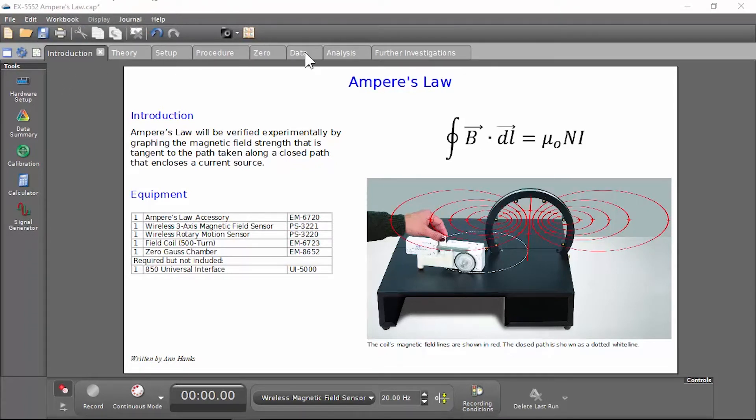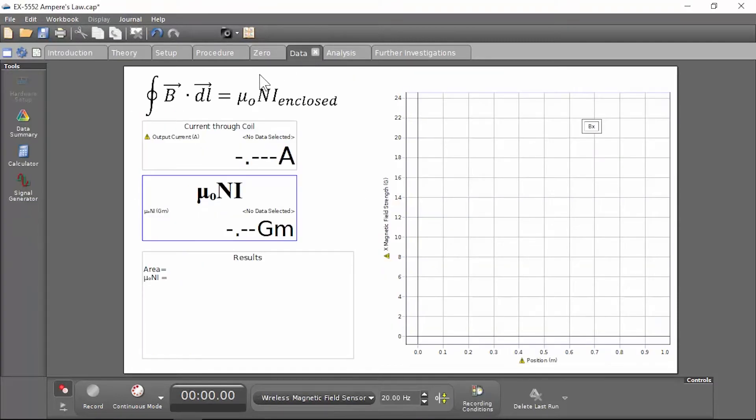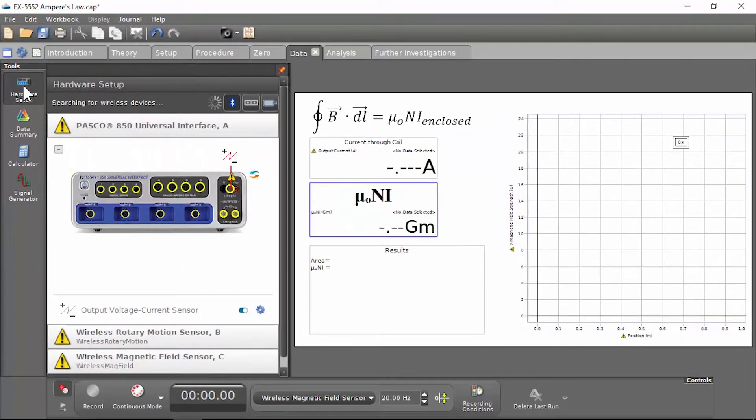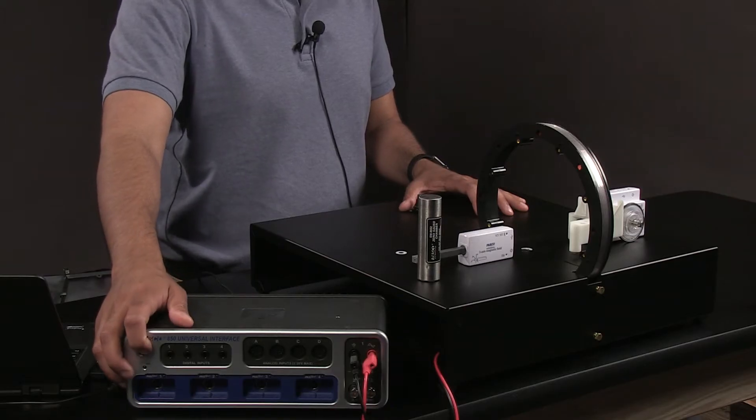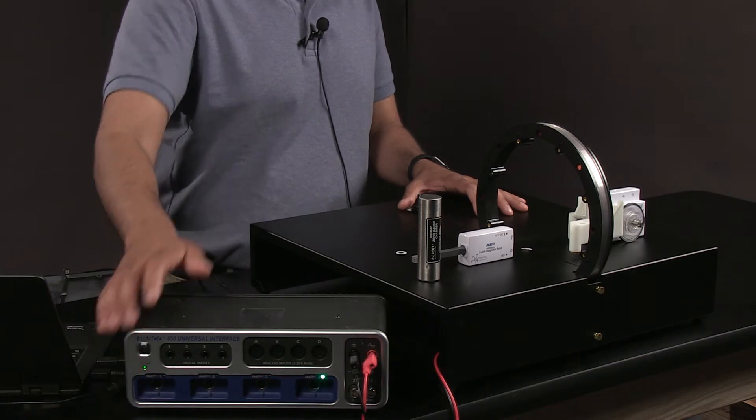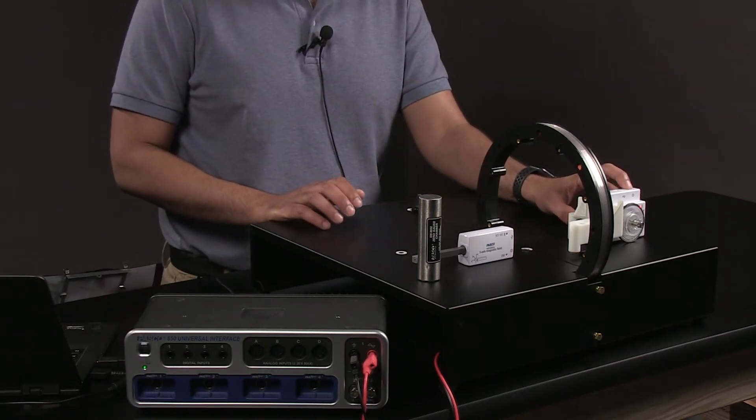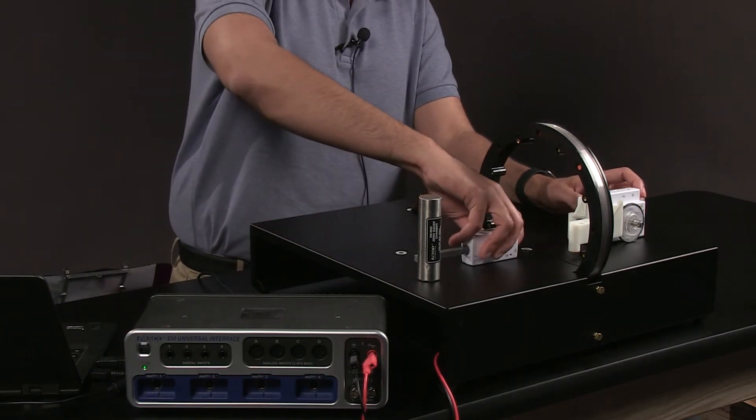In the file, we're going to go to the Data tab, and now we're going to click on Hardware Setup to connect our interfaces and sensors. Let's turn on the 850, and we'll turn on the Wireless Rotary Motion Sensor and the Magnetic Field Sensor.